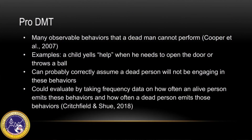Arguments have been made in favor of the dead man's test, given that there are many observable behaviors a dead man cannot perform. For example, a child yells 'help' when he needs to open the door, or throwing a ball across the yard. Based on our own personal experiences, we can probably correctly assume a dead person will not be doing any of these. These examples suggest we could evaluate the dead man's test by taking frequency data on how often a living person emits these behaviors versus how often a dead person might, according to Critchfield and Hsu in 2018.